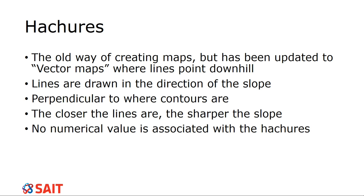Hatchers is the old way of creating maps, now updated to vector maps — we call them vector maps, with lines or little arrows pointing downhill. The lines are drawn in the direction of the slope, perpendicular to the contours. The closer the lines are, the steeper the slope. There's no numerical value associated with them; they were done by hand, often in the field, and took a very long time. But you need to be able to read them because you'll see them in township field notes and township plots.